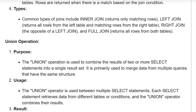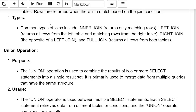Common types of join include: inner join, which returns only matching rows; left join, which returns all rows from the left table and matching rows from the right table; right join, which is the opposite of left join; and full join, which returns all rows from both tables.